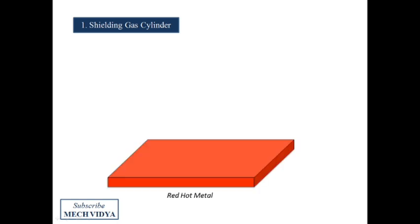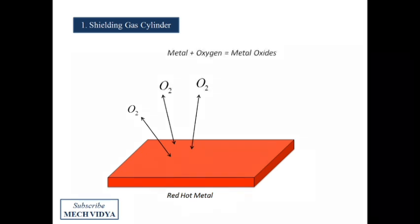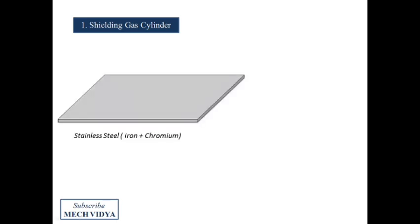In this way, corrosion starts from the welded region. An example of this is steel. Steel has a very small portion of chromium which protects it from corrosion.